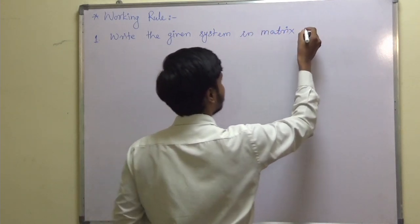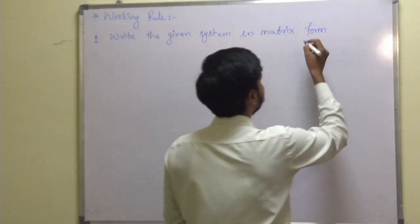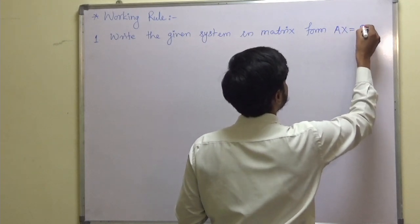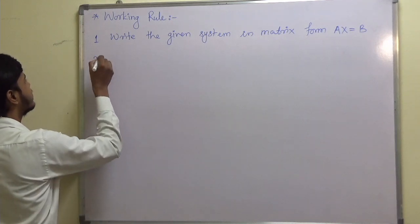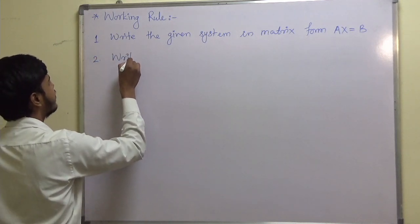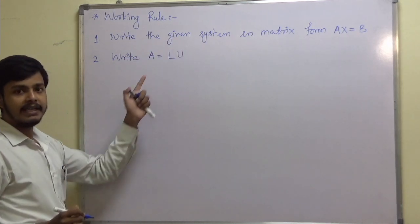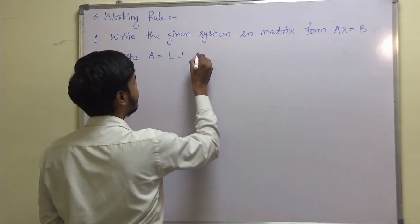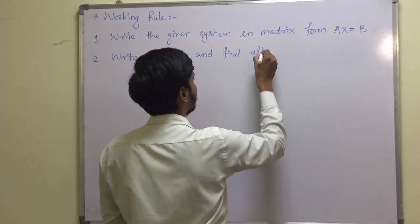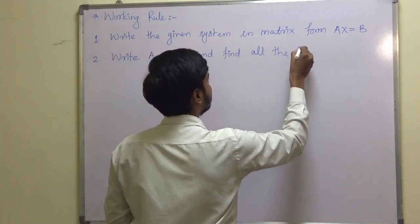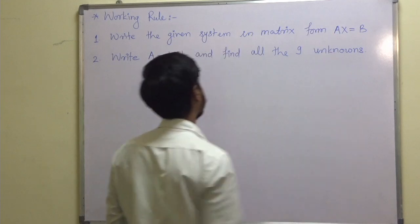Do you remember the matrix form? We have taken it in the earlier two topics as well. Matrix form: A x is equal to B. That is the first step. The second step says: write A equal to LU and find all the 9 unknowns.